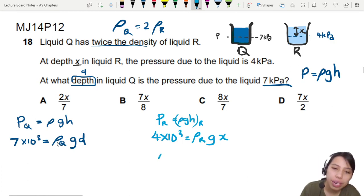So I can sub in this thing here as 2PR. But wait, let me rearrange for PR first. So PR is going to be 4 times 10 to the 3 over GX. Now I can sub that in.